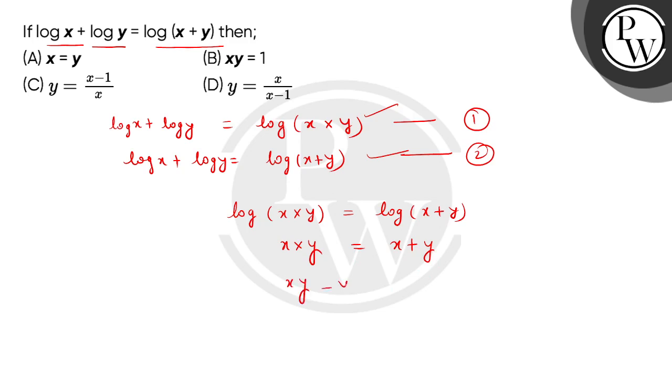This is xy minus y equals x. So here we can take common, y within bracket x minus 1 equals x.